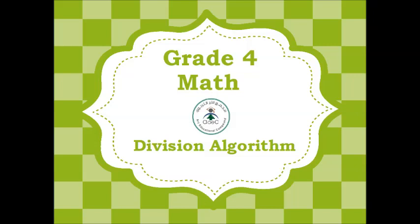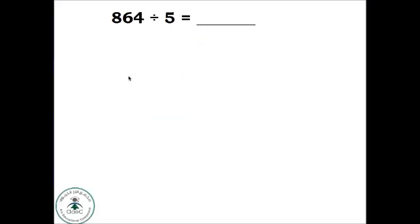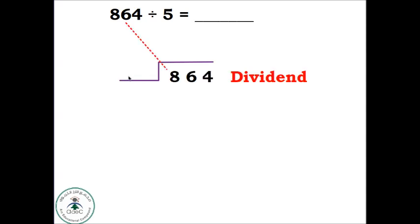Hello guys, today we will learn about the division algorithm, or how to divide using the division block. Suppose we have 864 divided by 5. 864 is the dividend and 5 is the divisor. This is a division block. To know where we put the numbers in this block, we imagine an X. 864 goes here and 5 goes there.